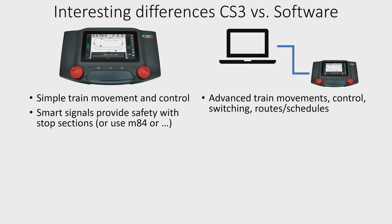As another option you can use an M84 to achieve the same thing with dumb signals. On the software side, everything is tracked by the computer and the software, so in truth you don't really need signals. The signals are really only there to make it look prototypical on the layout — just for your enjoyment to see something turn from red to green. If you're using software train automation you can actually get by with just dumb signals and do not have to invest in the more expensive smart signals.